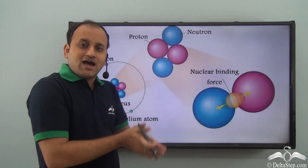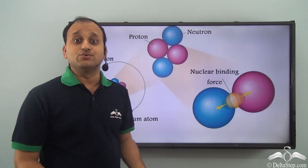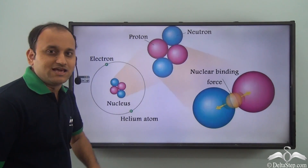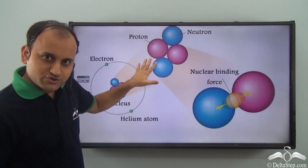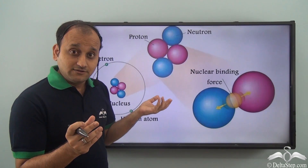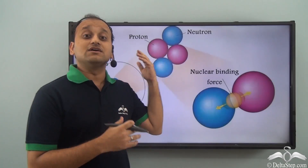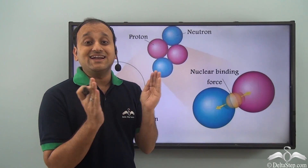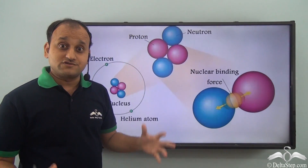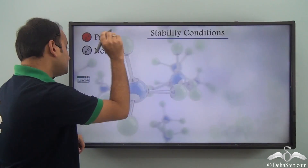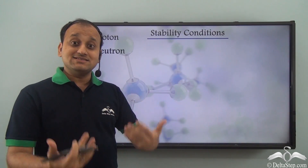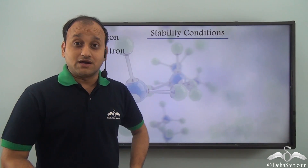Let's understand how the entire nucleus becomes unstable. First of all, let's see the nucleus of a helium atom. Now in this nucleus we have two neutrons and two protons. Now protons are positively charged, so they should repel each other — but how are they together? Because there are certain nuclear binding forces that act on these nucleons and keep them together. So while these protons are repelling each other, the nuclear binding forces are holding them together. Now there are certain conditions in which this stability is disturbed, causing an imbalance of forces, and then the nucleus becomes unstable.